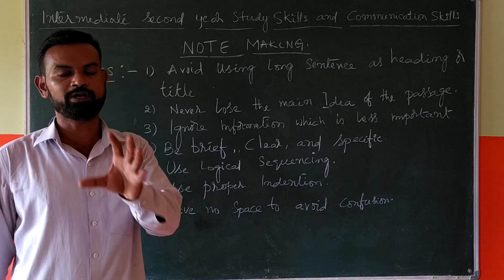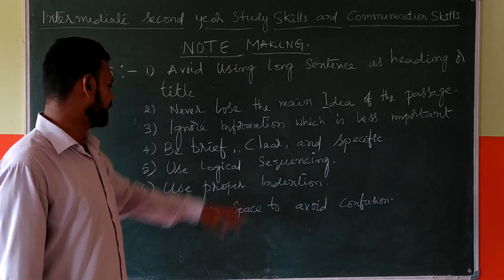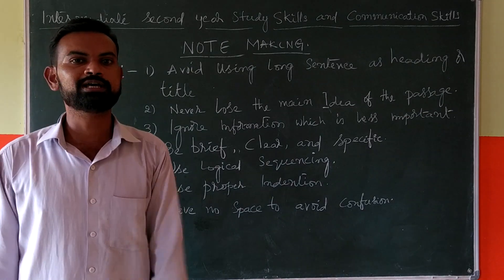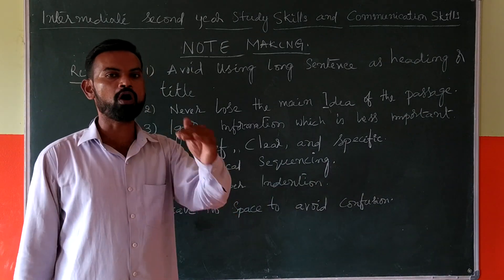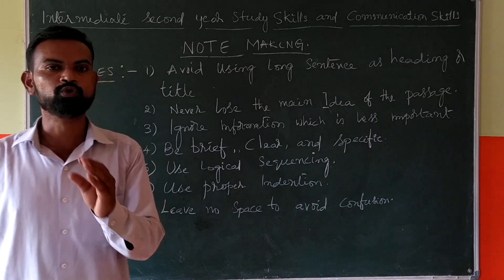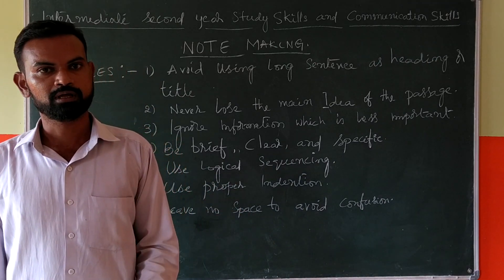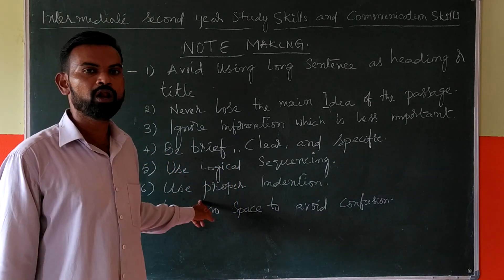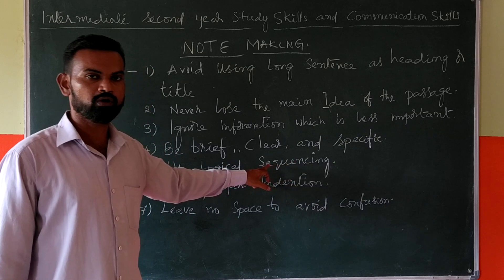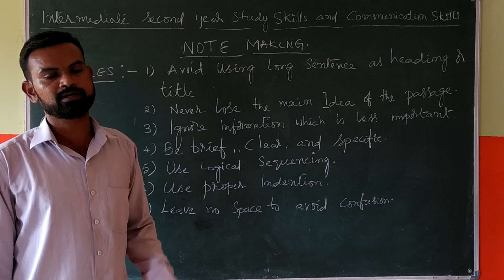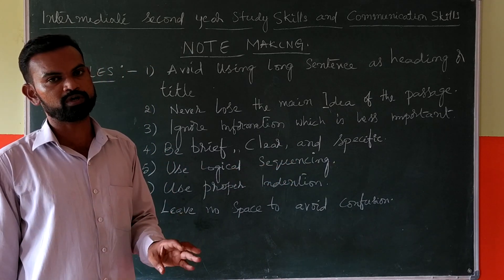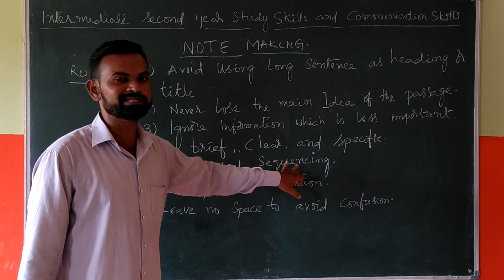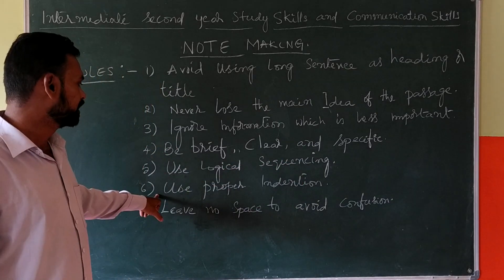And specific — you construct how to make the information into five sentences only, even though they gave ten sentences. That is not enough. Fifth rule: use logical sequences. Sequences means order — logical order. Make only important words in sequence.